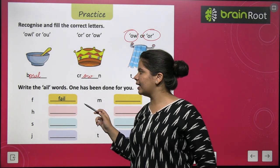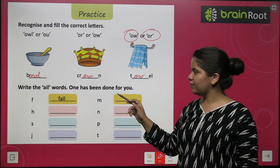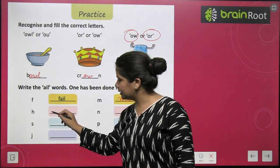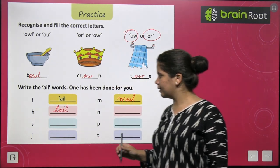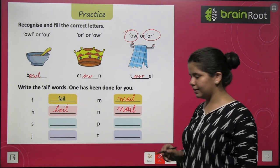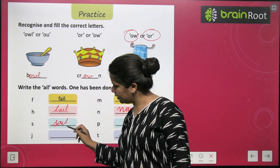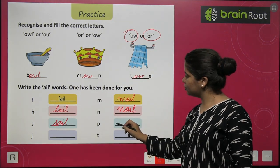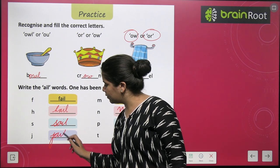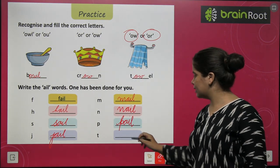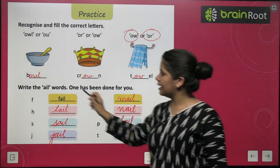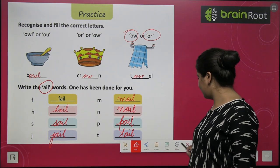Next, write the AIL words — one has been done for you. F gives us fail, M gives us mail, H gives us hail. J can make jail, T can make tail. So these are all our AIL words.